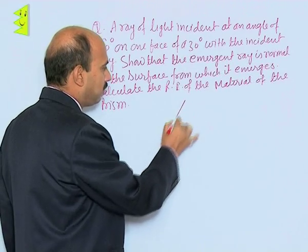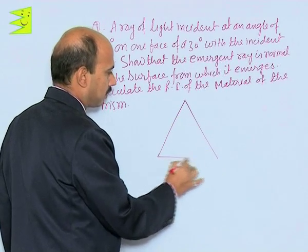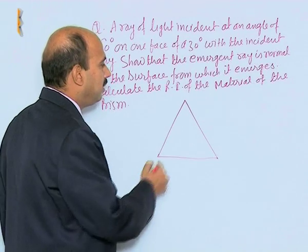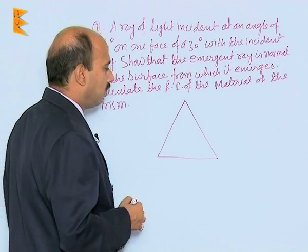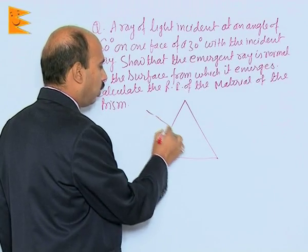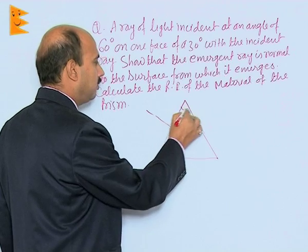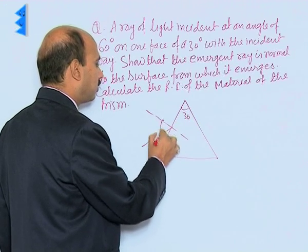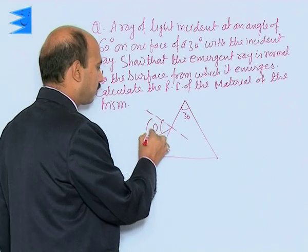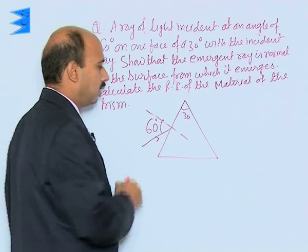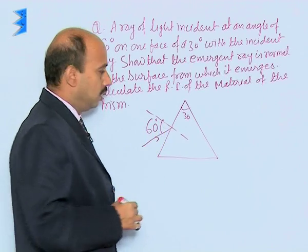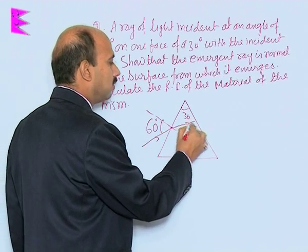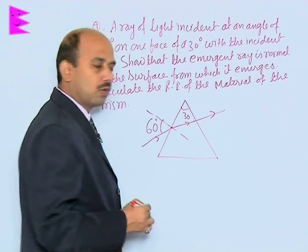If you take a prism like this, we can take this as a normal. This angle is 30 degrees and this angle is 60 degrees. The ray refracts and goes like this, and its state away is a normal.